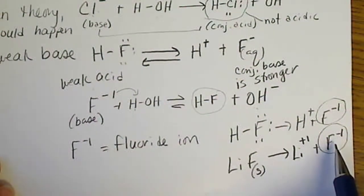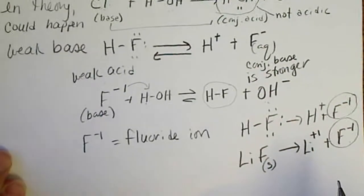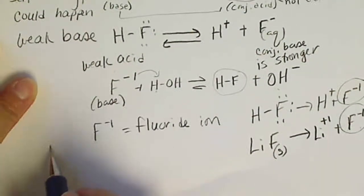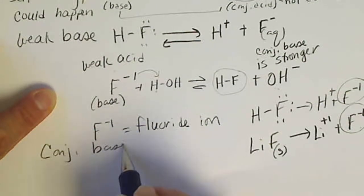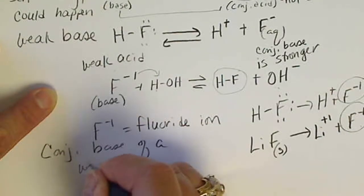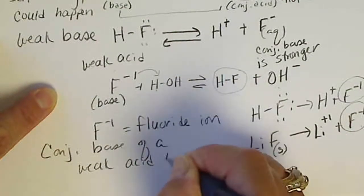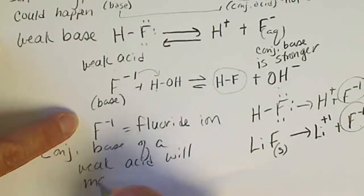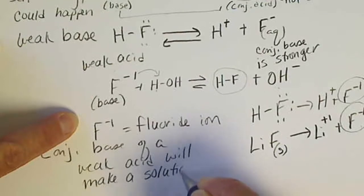The conjugate base of a weak acid will affect the pH. To state it clearly: the conjugate base of a weak acid will make a solution basic — in other words, it will act like a base.